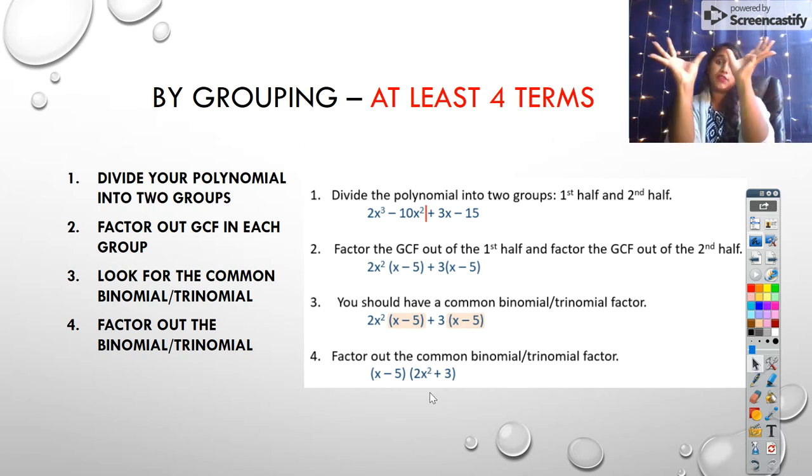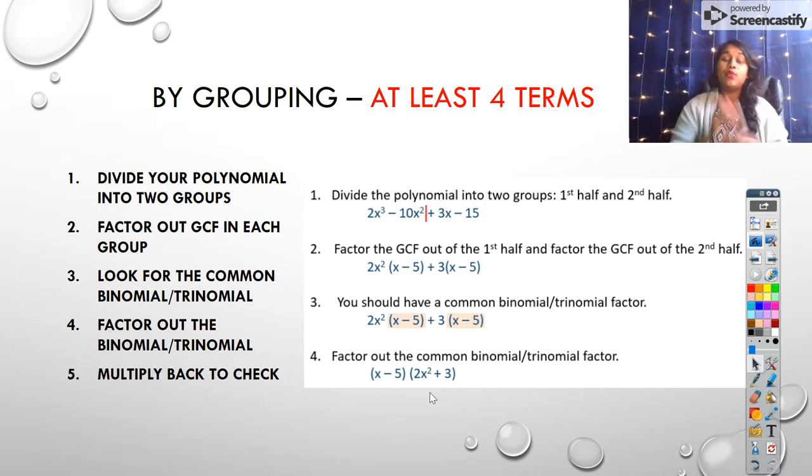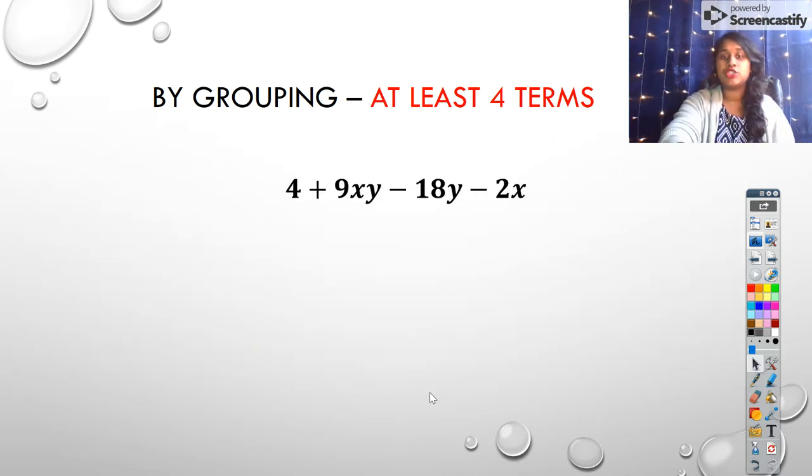So we now see our different factors. And if I want to test it back, we always do step 5, multiply to check back. Why do we always do step 5? Every now and then we make a mistake. So it's important that we check our work.